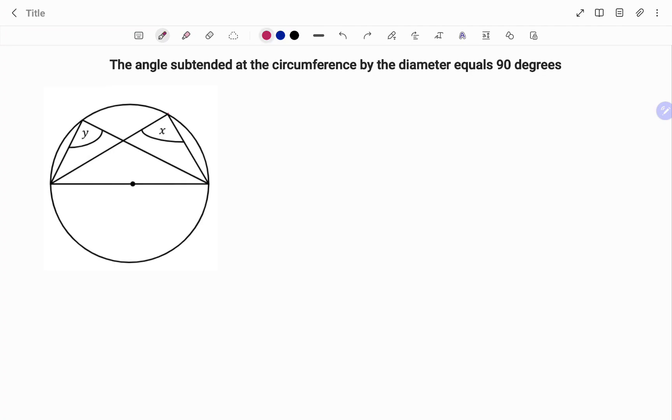In my first example, I have a circle with two triangles. I'm going to label the corners: center O, this is B, this is C, and D. AOB is the diameter of the circle. Therefore, the angles subtended by the diameter at the circumference - that is angle x and y - are equal to 90 degrees. So x equals y equals 90 degrees, the reason being angle in a semicircle.